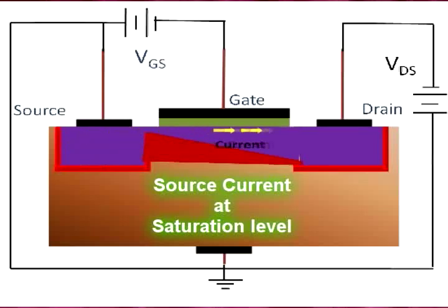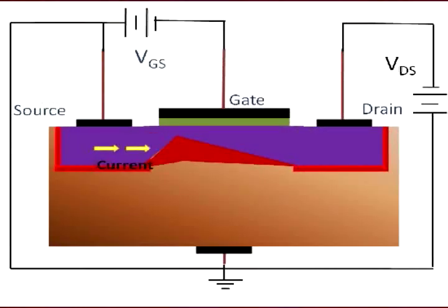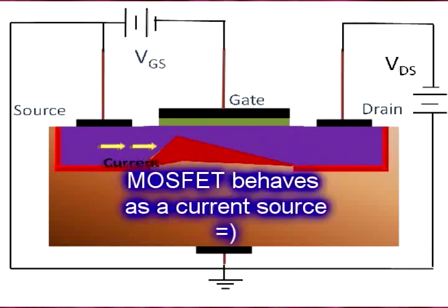As VDS is increased further with constant VGS, the pinch-off point moves toward the drain, reducing the effective length of the channel and increasing source current slightly. In saturation region, the MOSFET behaves as a current source with source current independent of VDS and is controlled by VGS.